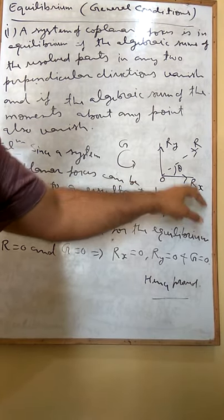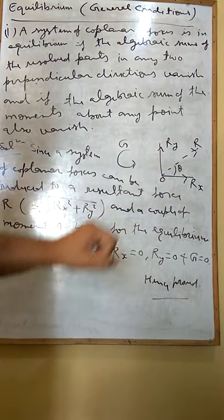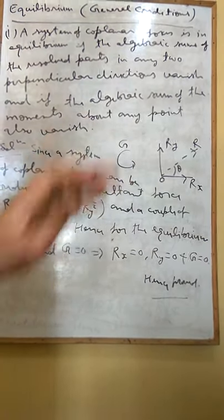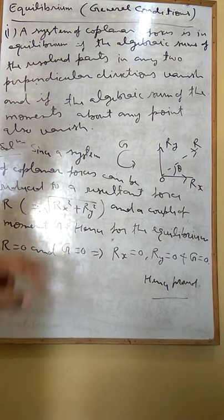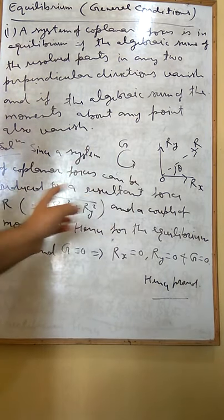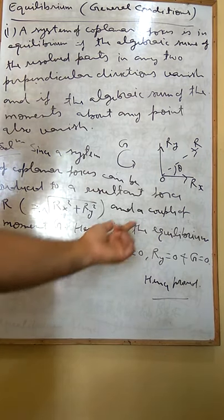One Rx and one Ry - they are perpendicular to each other, and the resultant is R. Also, we have a couple of moments G. Earlier we have shown this. Since the system of coplanar forces can be reduced to its resultant force R, R equals the square root of Rx squared plus Ry squared, and a couple of moments G.